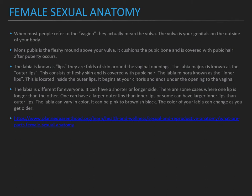The labia majora, known as the outer lips, consists of fleshy skin covered with pubic hair. The labia minora, known as the inner lips, is located inside the outer lips. It begins at your clitoris and ends under the opening to the vagina. The labia is different for everyone — it can have a shorter or longer side, and in some cases one lip is longer than the other. One can have larger outer lips than inner lips, or vice versa. The labia can vary in color from pink to brownish black, and the color can change as you get older. This still came from Planned Parenthood.